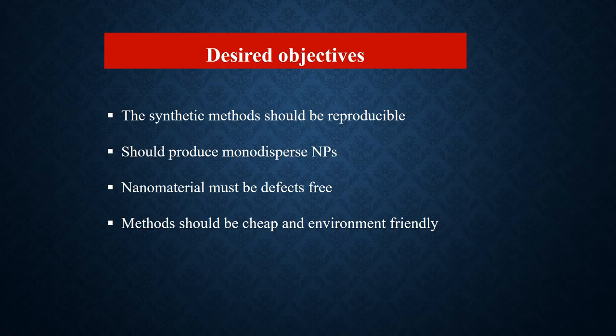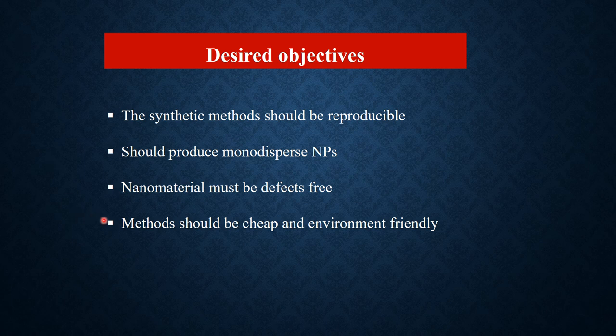What are the desired objectives of a method to produce nanomaterials? The synthetic method should be reproducible — using that method again and again, the size of the nanomaterials should be the same. The method should produce monodispersed nanomaterials or particles, these materials must be defect-free, and essentially it should be cheap and environmentally friendly.